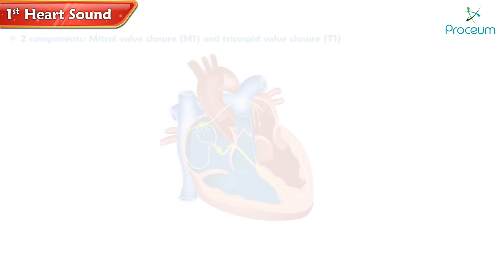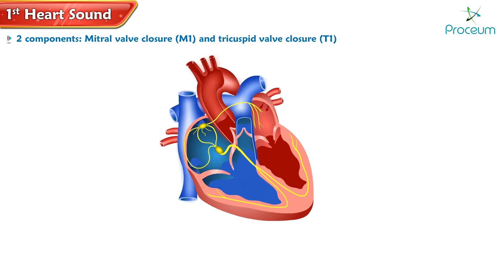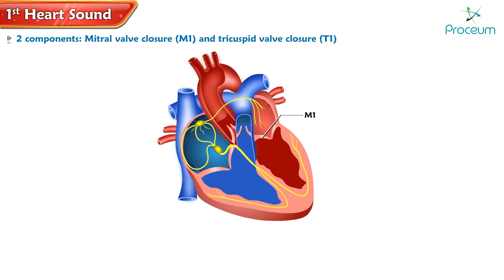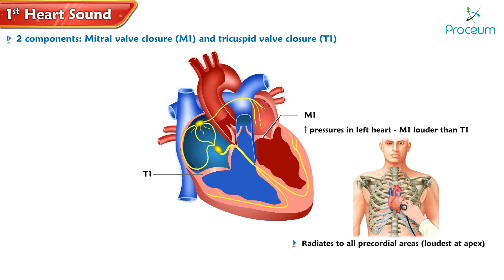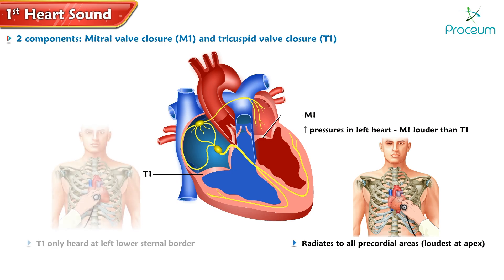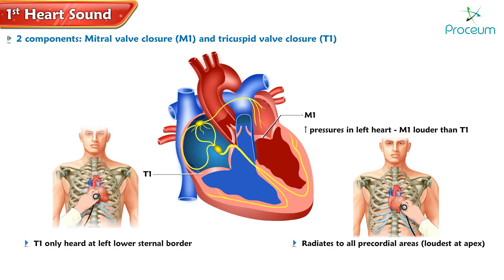S1 comprises two components. The first component, M1, results from the closure of the mitral valve, while the second component, T1, occurs when the tricuspid valve closes. Due to higher pressures on the left side of the heart, the M1 sound is more pronounced and radiates to various areas on the chest, with the apex being the loudest. The T1 sound is generally heard only at the left lower sternal border.